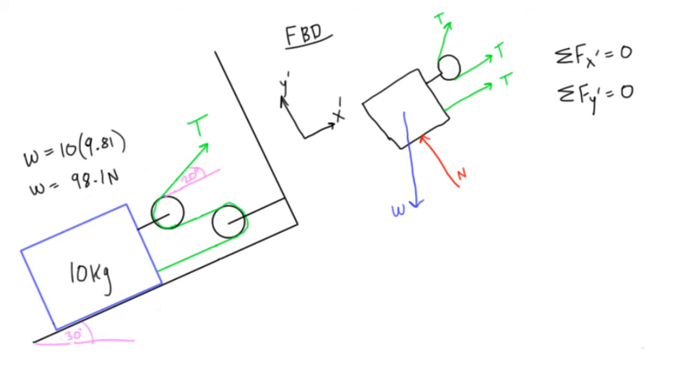Alright now what we can do is we can break down w into its x prime and y prime components. So here we'll have this will be w y prime component and this guy would be the w x prime component. Now this angle here is also going to be 30 degrees. We talked about how to find that angle, it's just some simple geometry and there's a little shortcut we talked about in the last video using your hand. So definitely check that out if you're confused about how to get this angle.